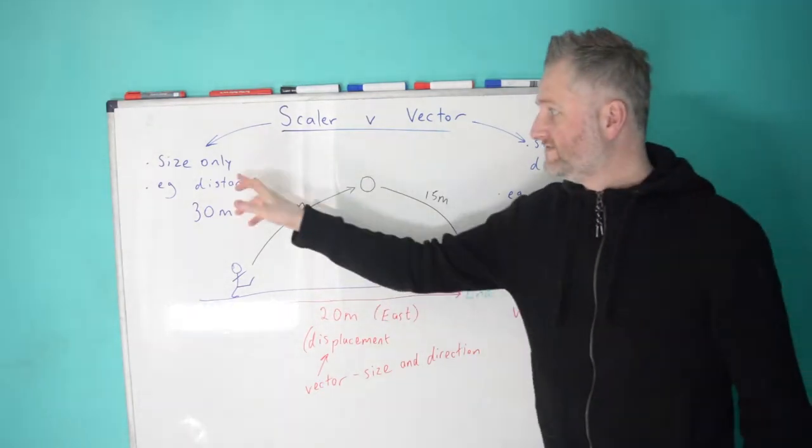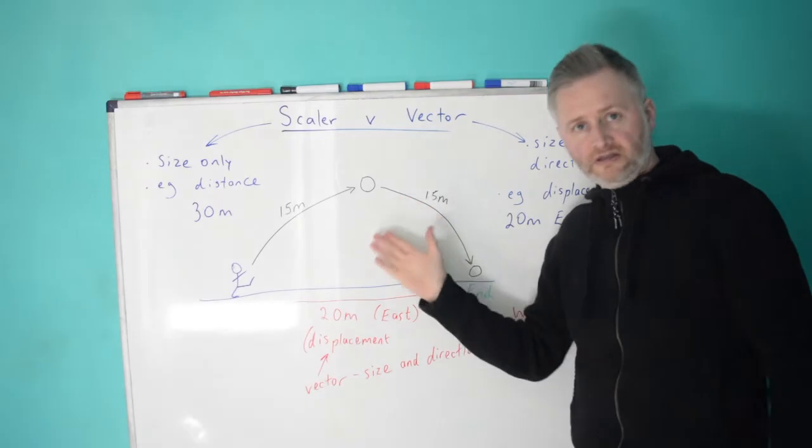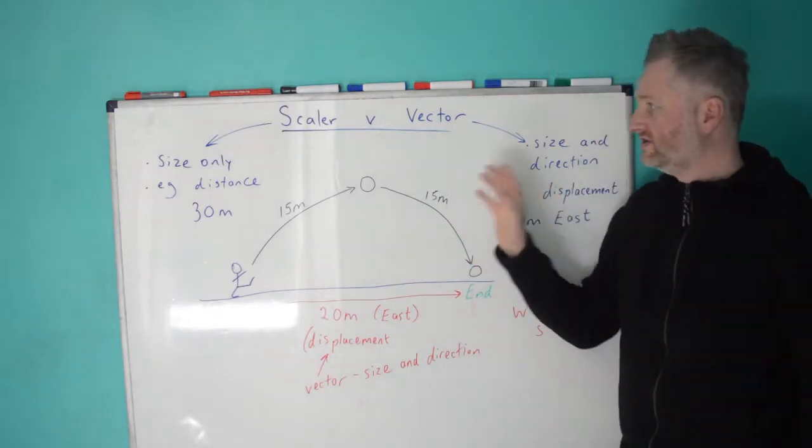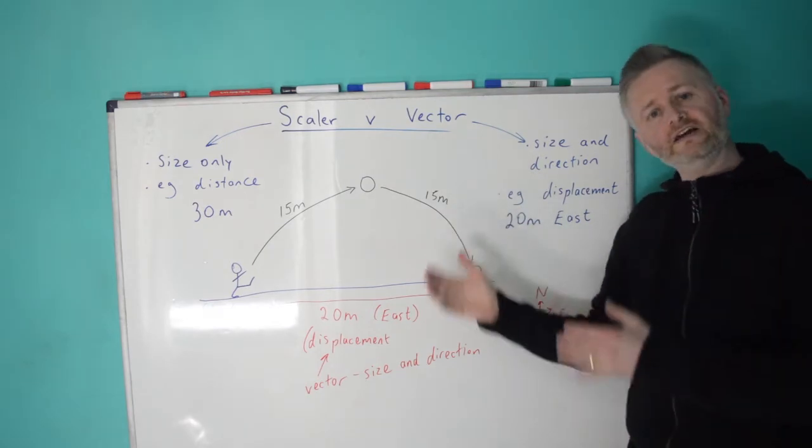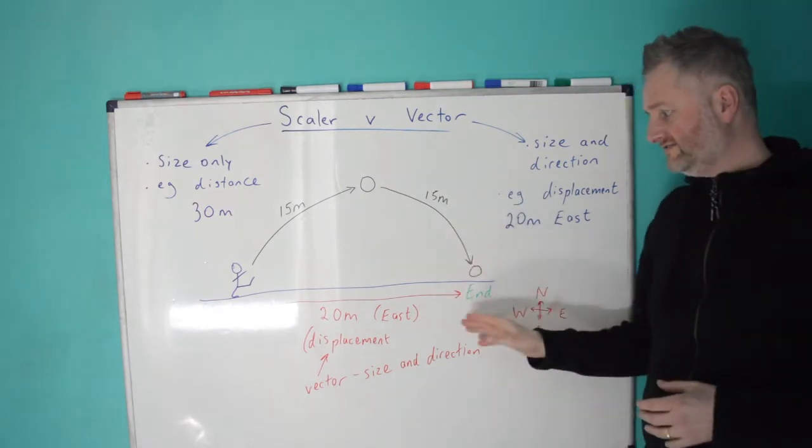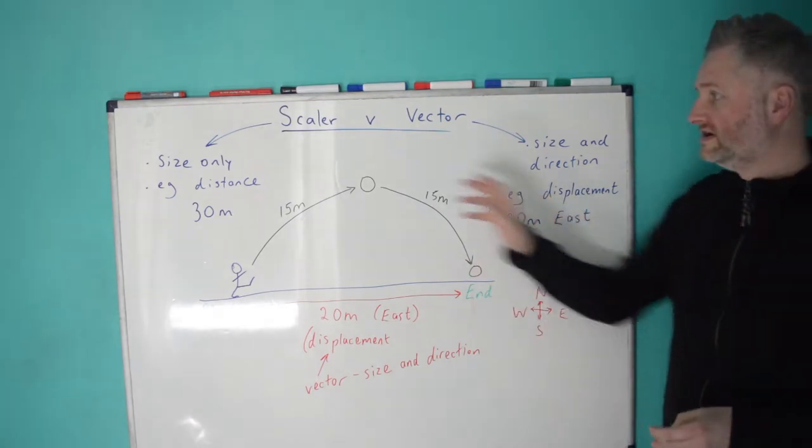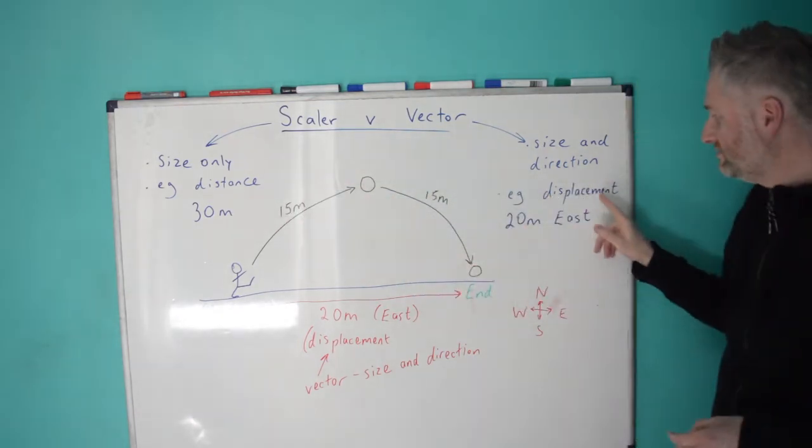Now, because I've said a size only, that's a scalar. However, if we wanted to turn that scalar into a vector, I'd have to give a direction as well. And it would no longer be called a distance. It would be displacement.